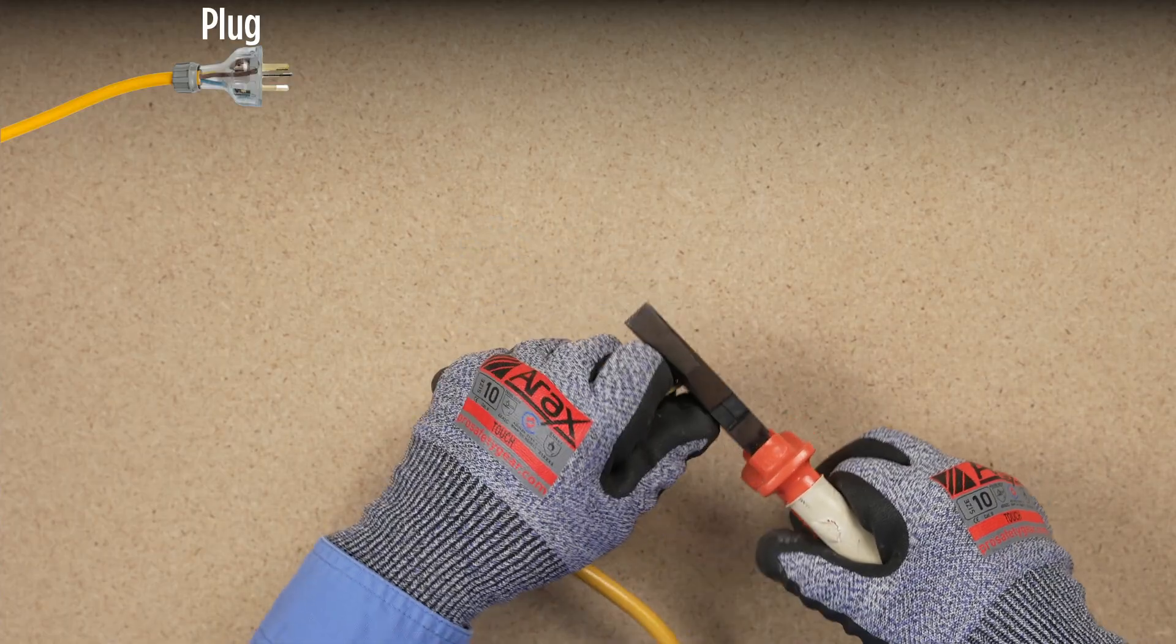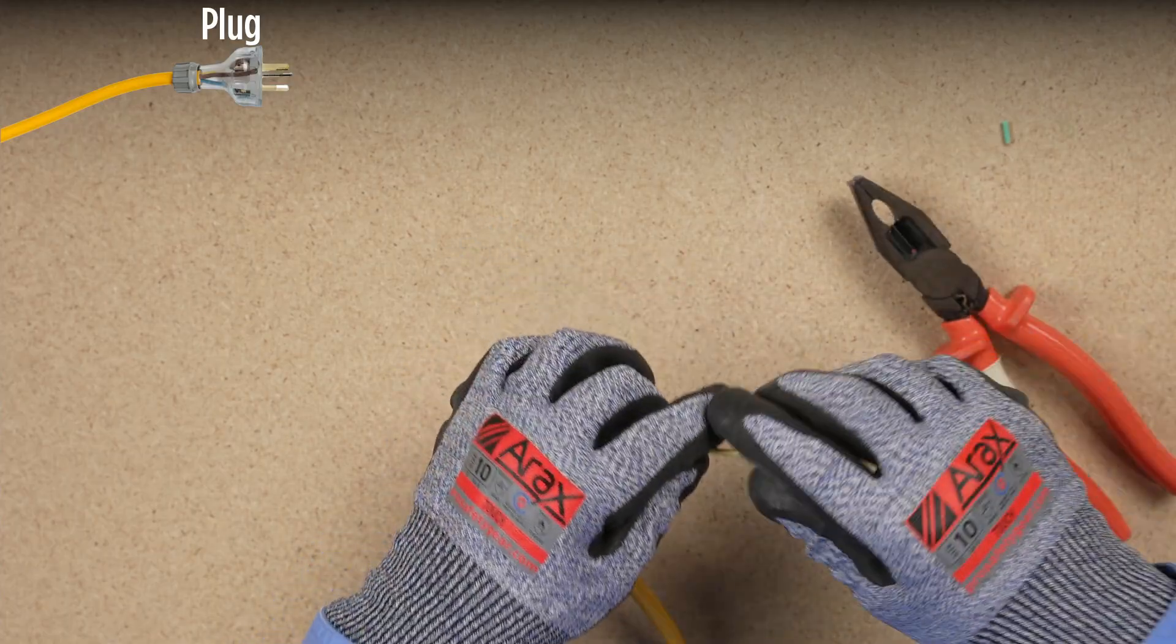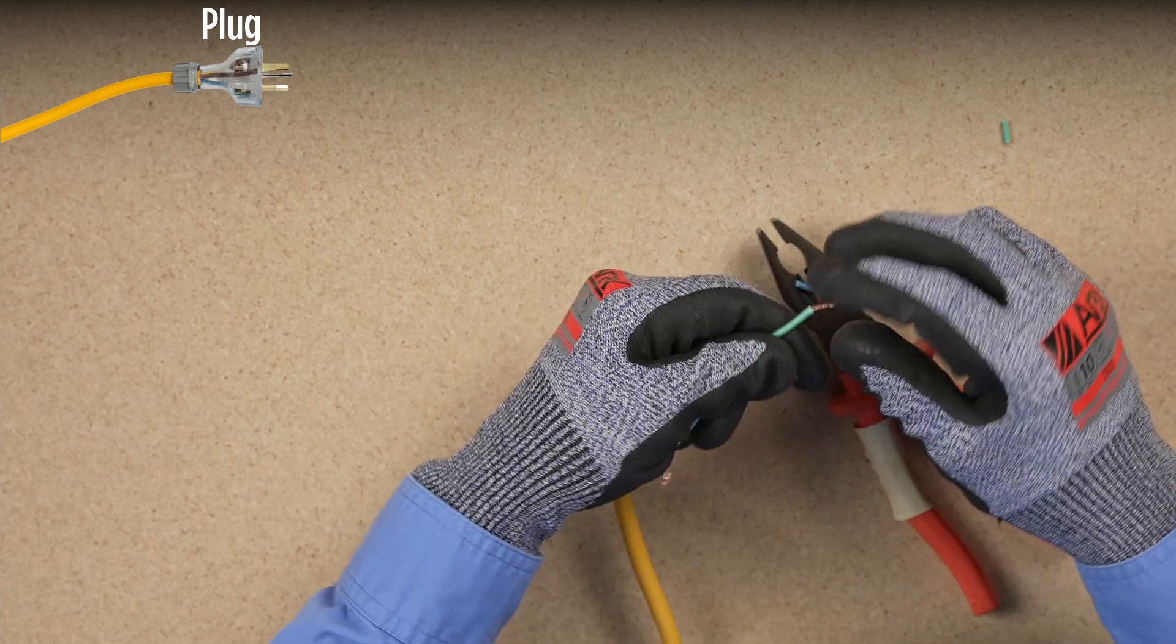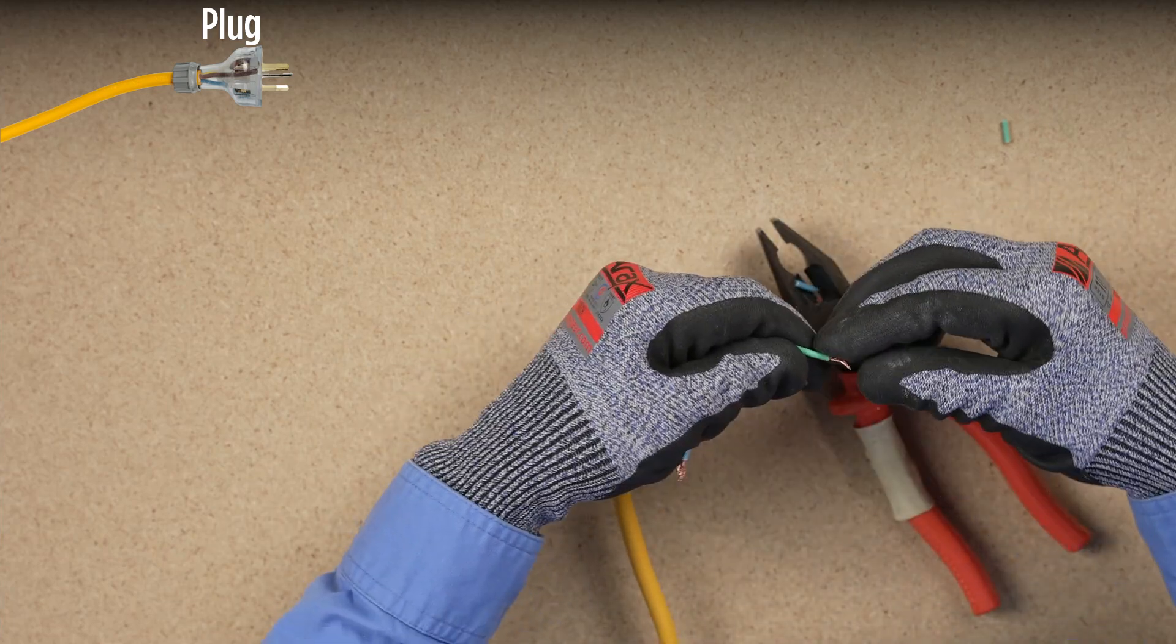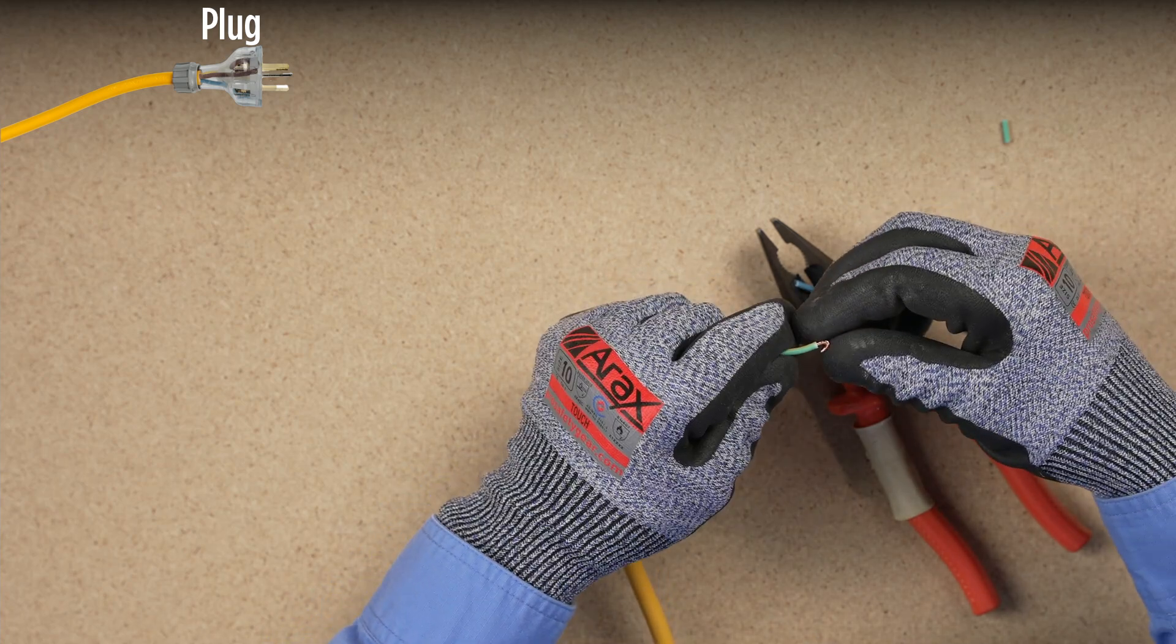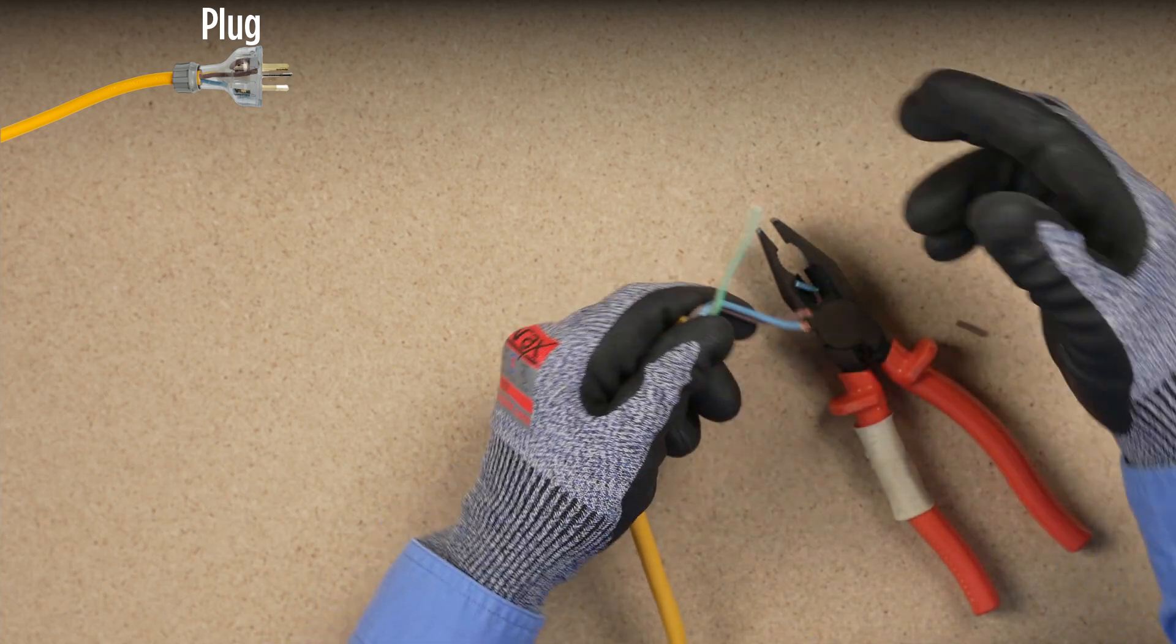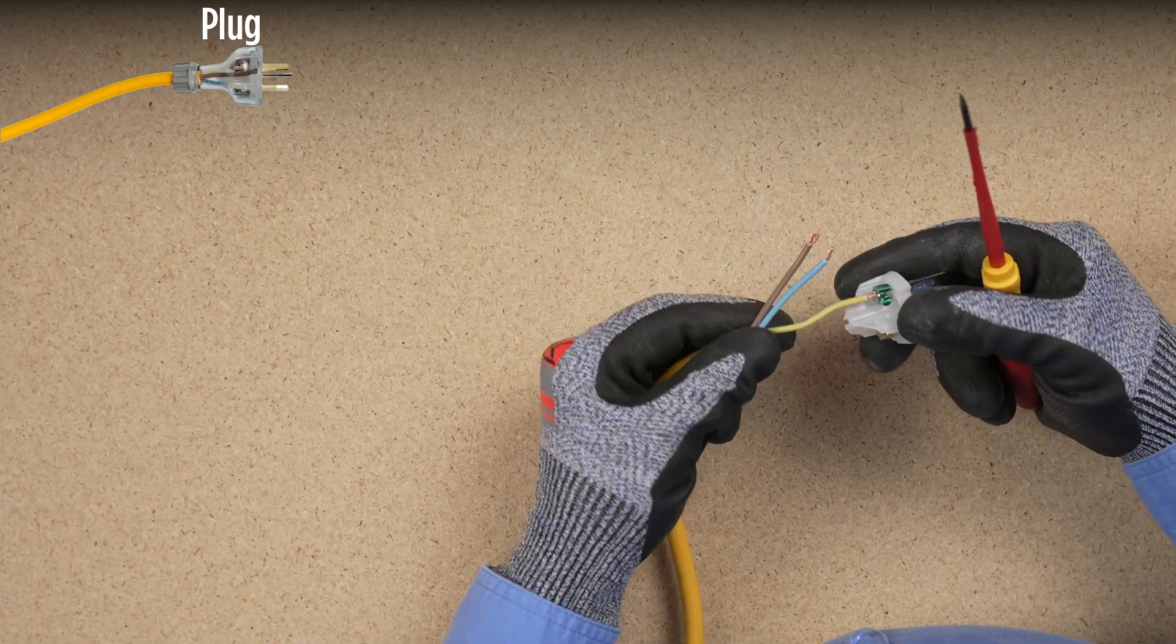After stripping sufficient sheathing, you can position the conductors and cut to length, allowing for termination. It is good practice to twist and double over conductor ends for clamping, as this will help ensure good electrical connections.